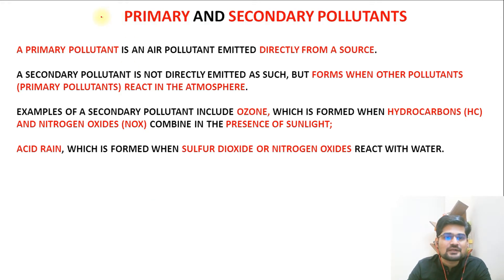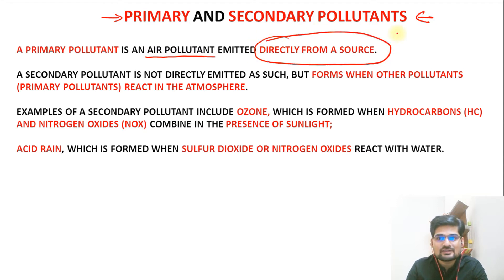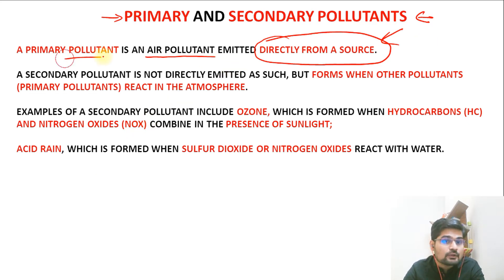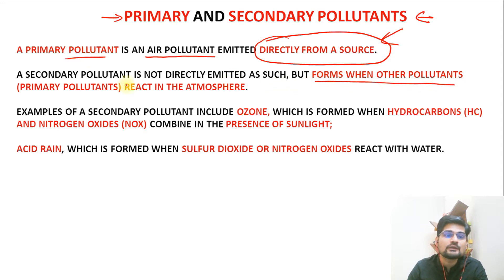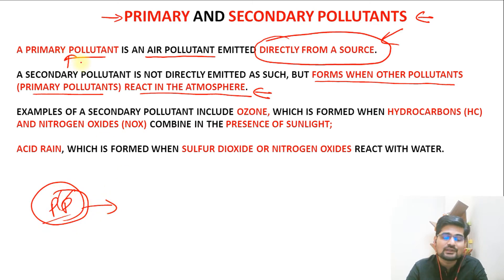First, we need to understand primary and secondary pollutants. A primary pollutant is an air pollutant emitted directly from a source. If it directly mixes with fog, it directly causes smog formation. A secondary pollutant, however, is derived from primary pollutants — it is not directly emitted. It forms when primary pollutants react with each other in the atmosphere, producing a derivative compound.